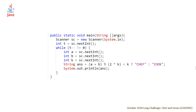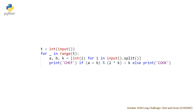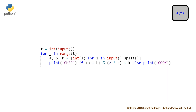Last but not least, the Python solution — the most concise of all, as per usual. We read in T, then have a for loop in range T, read in A, B, K, and print Chef if (A + B) % (2 * K) is less than K, otherwise print Cook. For time complexity, this problem is O(T), because we have T test cases and the work per test case is constant.